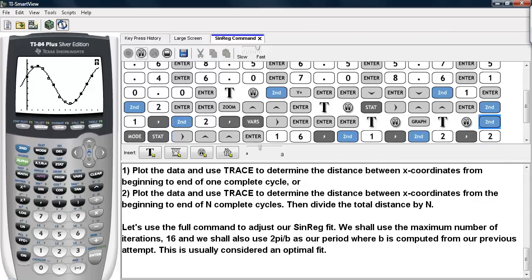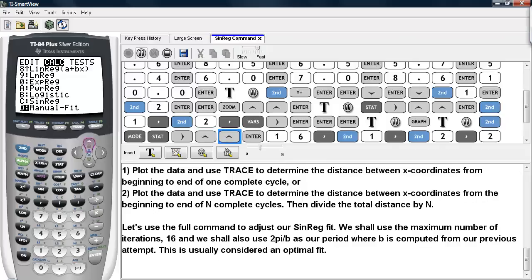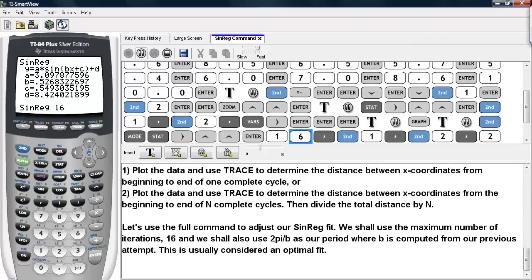So we'll go ahead and do 2nd and mode. We'll quit and go back to the home screen. Then we'll hit stat and calc and go back to the sinreg command. And this time we'll type in 16 for the maximum number of iterations. And then we'll tell it to use L1 as the x list, and then L2 as the y list.